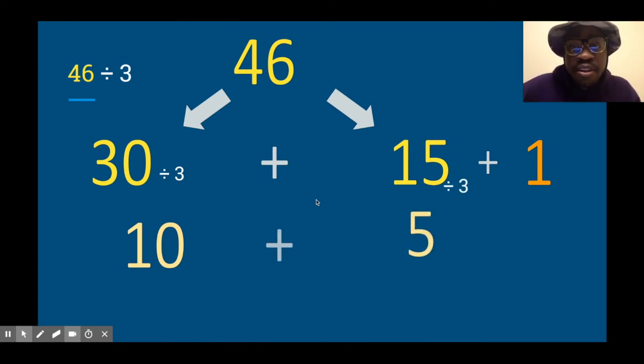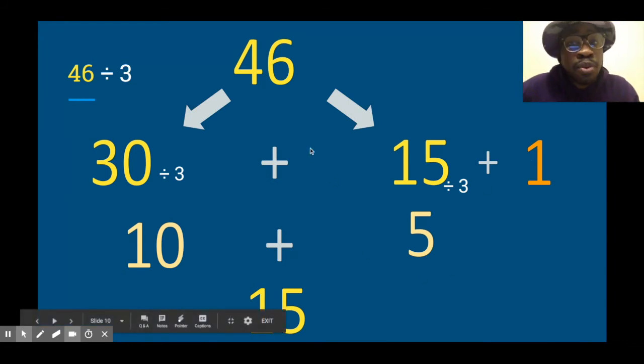Those two together, 10 plus 5 is 15. Now our answer is not 15 because remember this 1 from before we had an extra 1 that we did not use. 15 times 3 is 45, not 46, but we still had that 1. So it's not 15, but 15 with a remainder of 1.